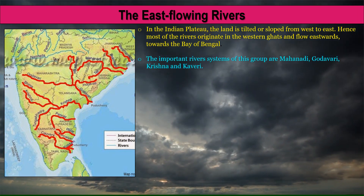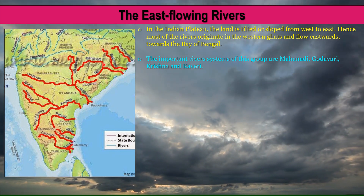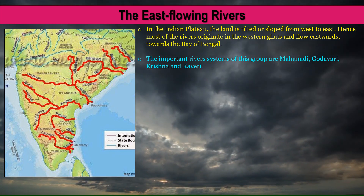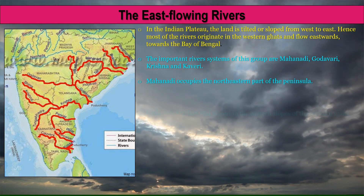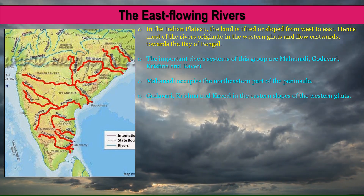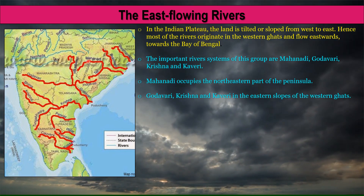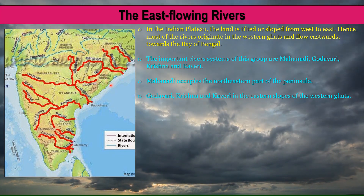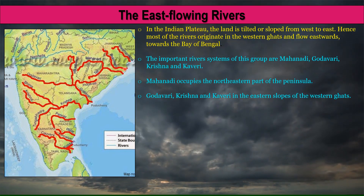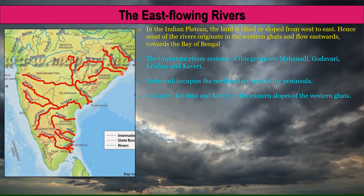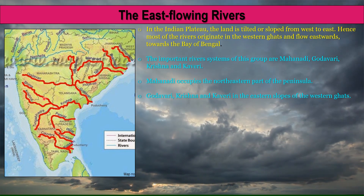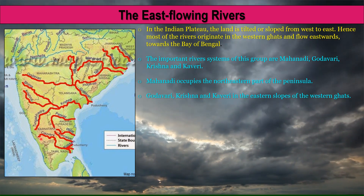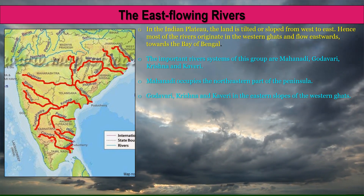The important river systems of this group are Mahanadi, Godavari, Krishna and Kaveri. Mahanadi occupies the northeastern part of the peninsula. The Godavari, Krishna and Kaveri originate from the eastern slopes of the Western Ghats.